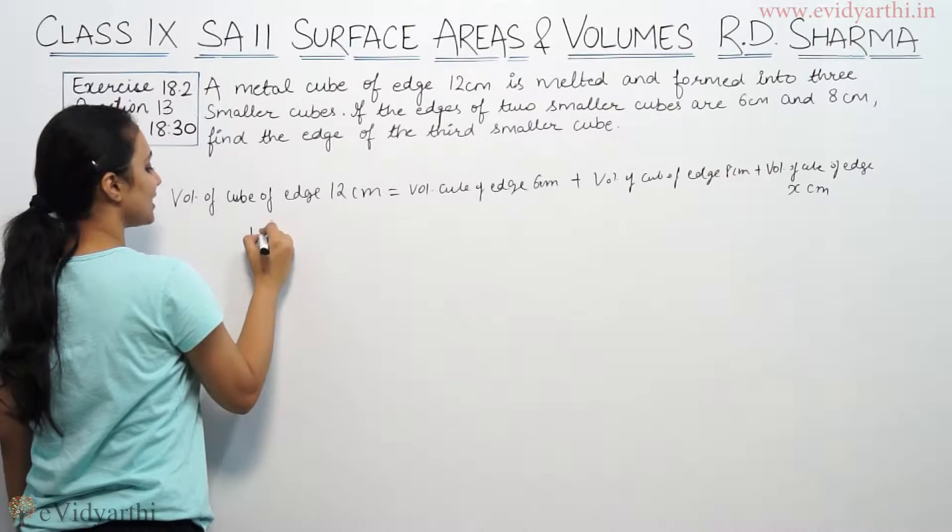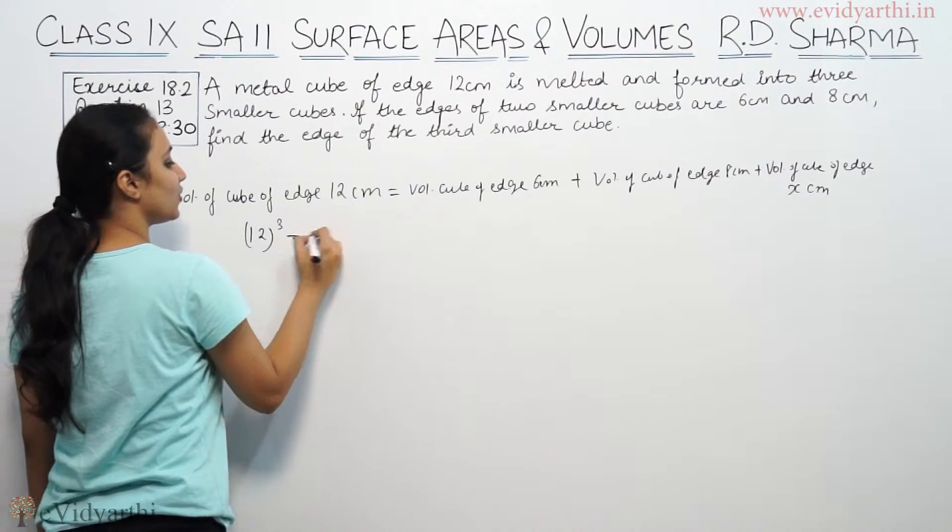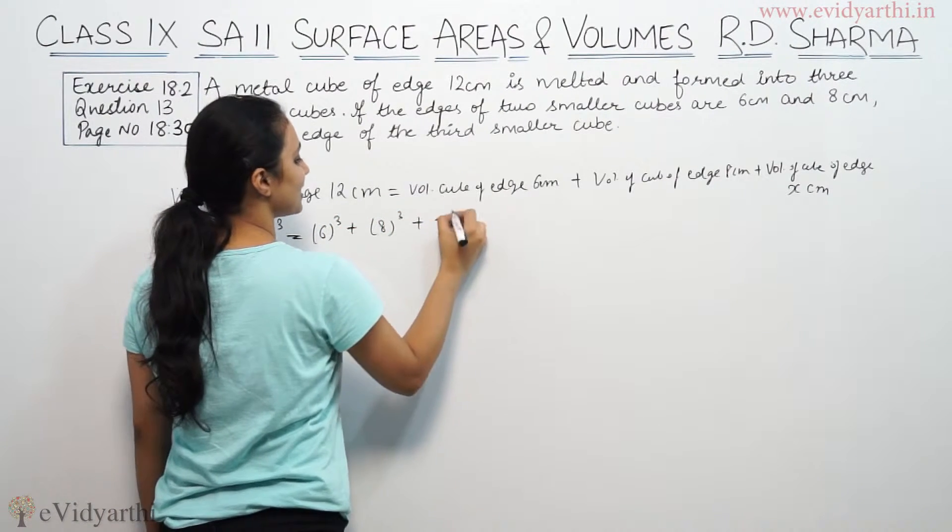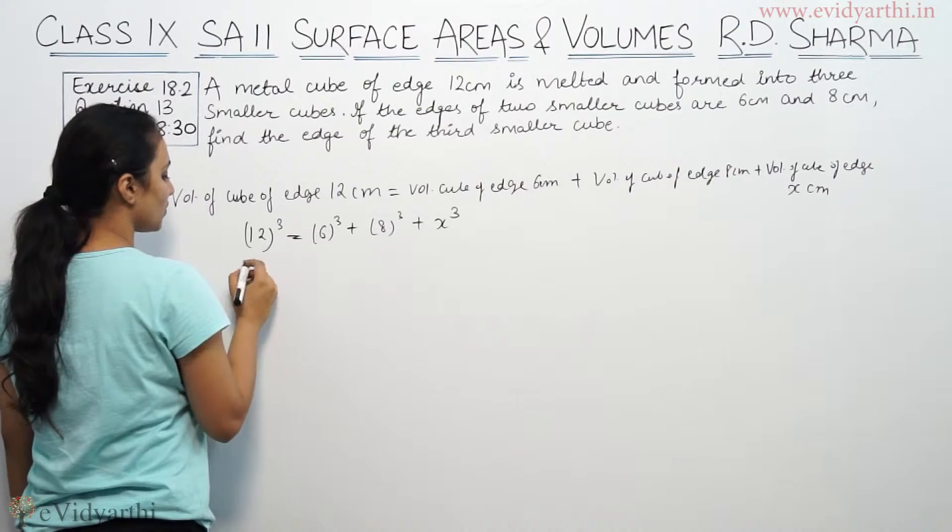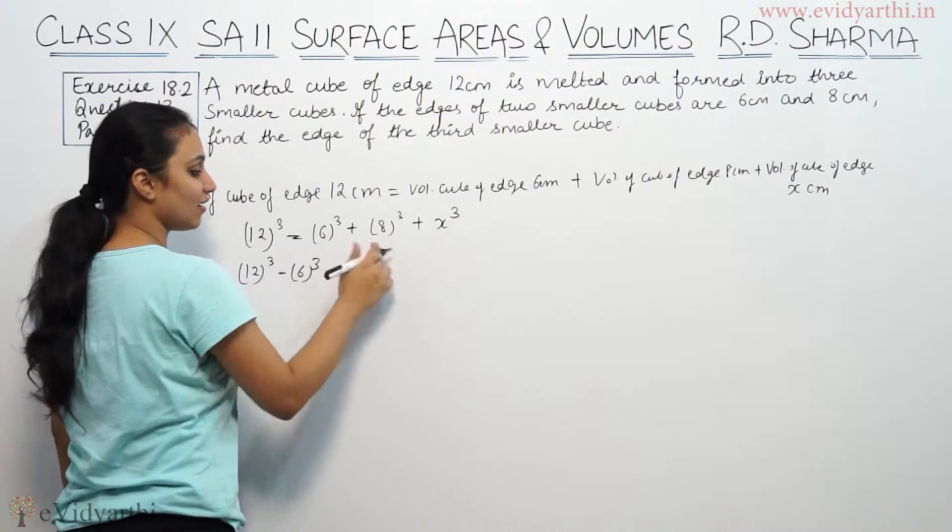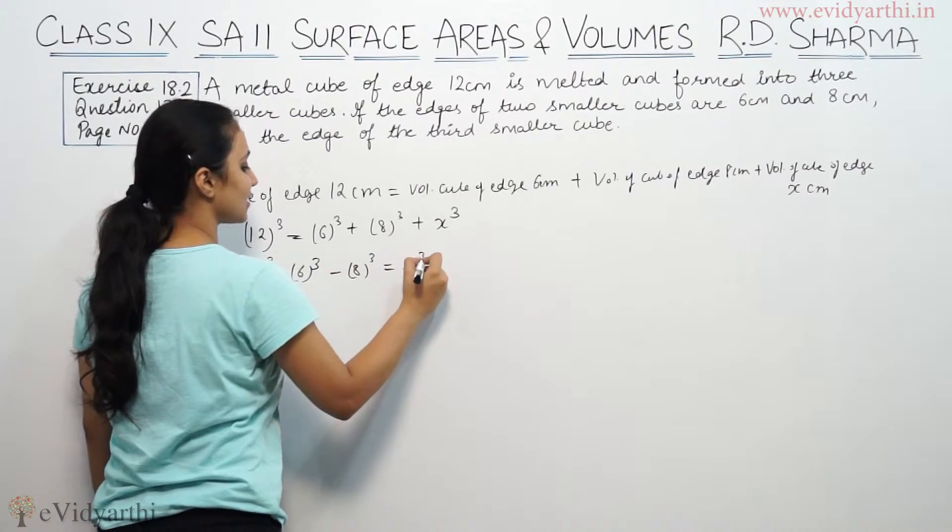Volume of cube is called side cube. So 12 cube, here is 6 cube, that will be 8 cube, plus last is x cube. So 12 cube minus 6 cube minus 8 cube equals x cube.